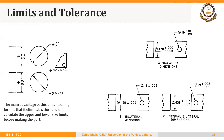Even if we assume we can make every part equal to the basic size, it is very difficult to measure it according to the level of accuracy mentioned on the drawing. And practically it is not required to make every part equal to the basic size, because some variation is allowed depending upon the functional requirements of that part. That allowed variation in the size of a part is called tolerance.